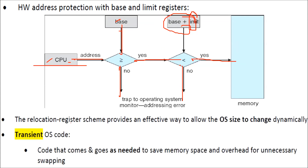The relocation register scheme provides a very efficient way to allow the operating system size to change dynamically. There is also transient operating system code — code that comes and goes as needed — to save memory space and overhead from unnecessary swapping.